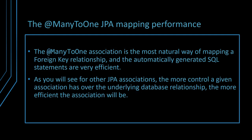The many-to-one association is the most natural way of mapping a foreign key relationship and the automatically generated SQL statements are very efficient. As you will see for other JPA associations, the more control a given association has over the underlying database relationship, the more efficient the association will be.